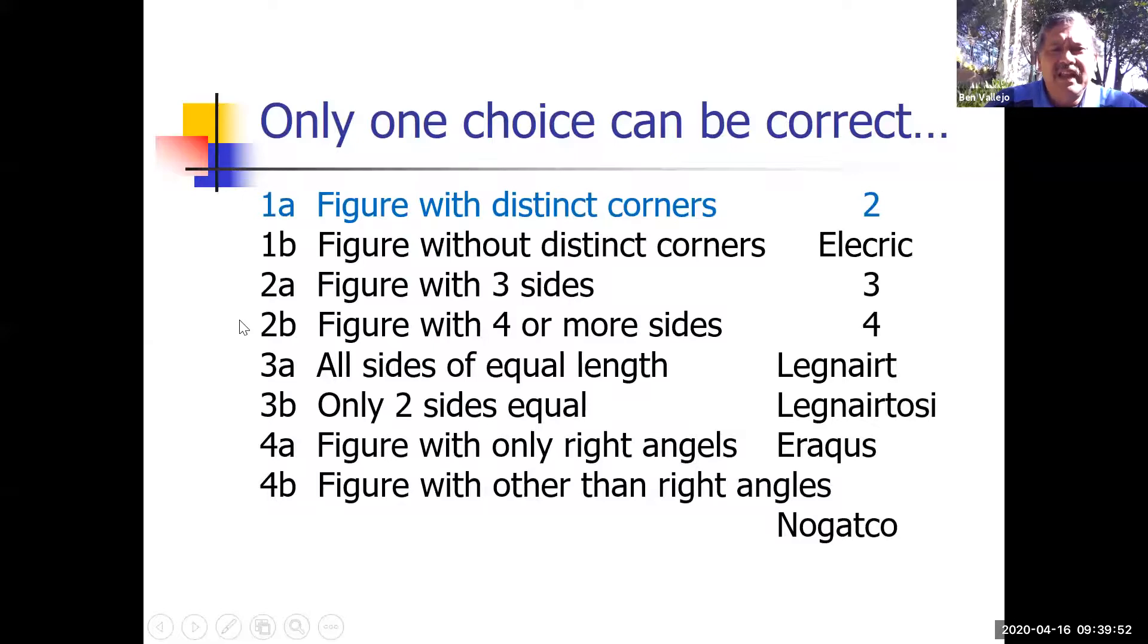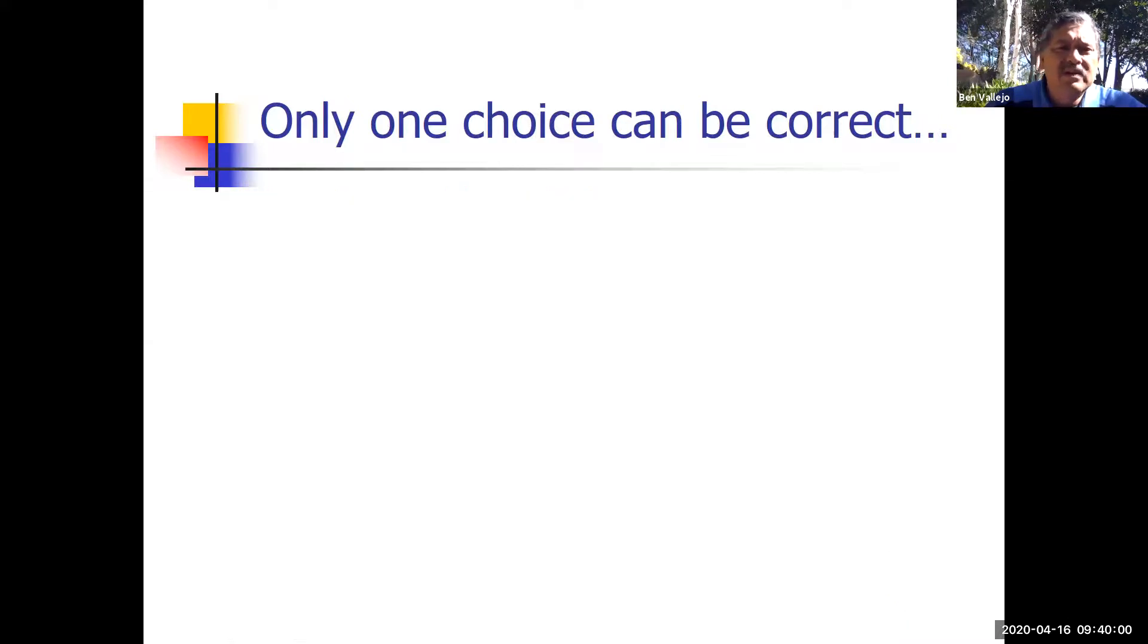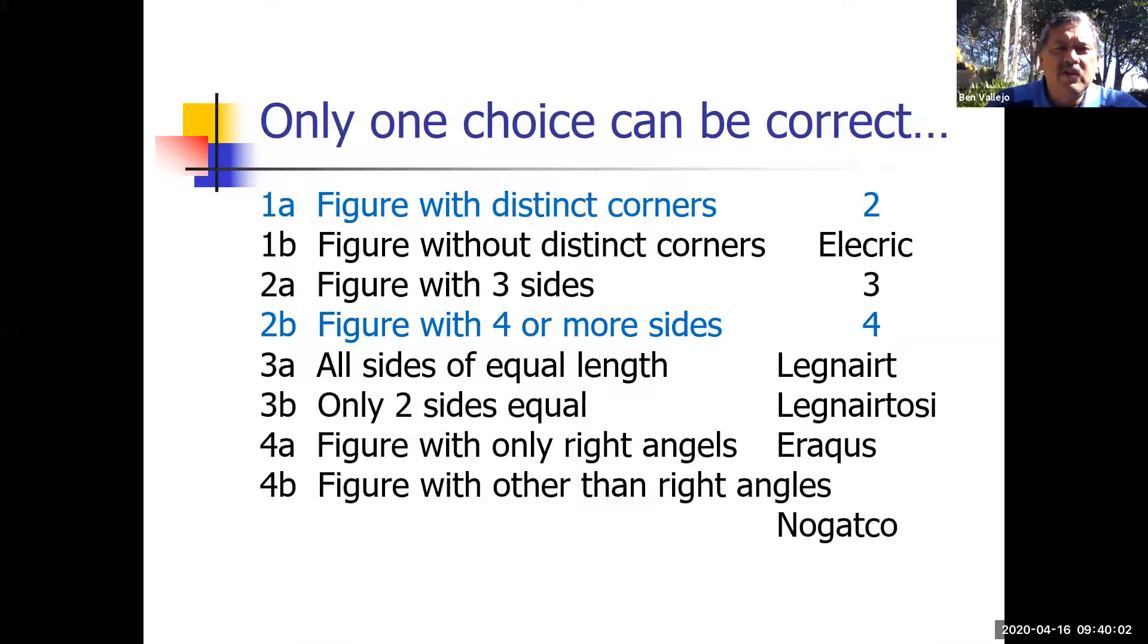Then I'm going to take a look at 2a and 2b for this figure. Does it have three sides or four or more sides? I'm going to go with four or more, so that's 2b. And 2b tells us to go to number four, so we skip number three altogether.